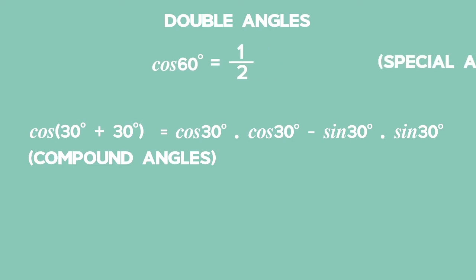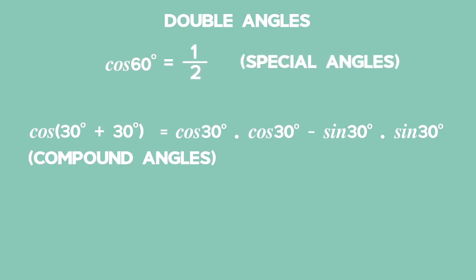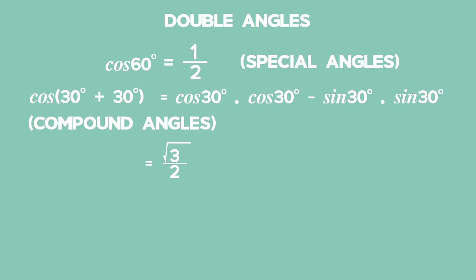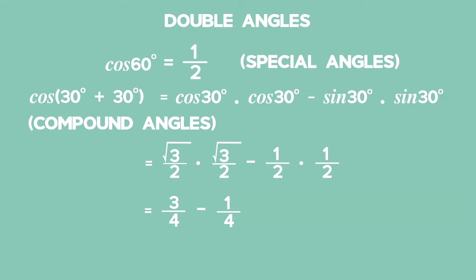Using special angles, the equation simplifies to (√3/2) times (√3/2) minus (1/2) times (1/2), which gives us 3/4 minus 1/4, which equals a half, confirming the result shown earlier. We can generalize this finding and others by working with variables instead.